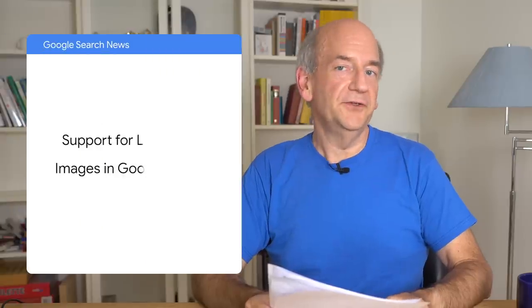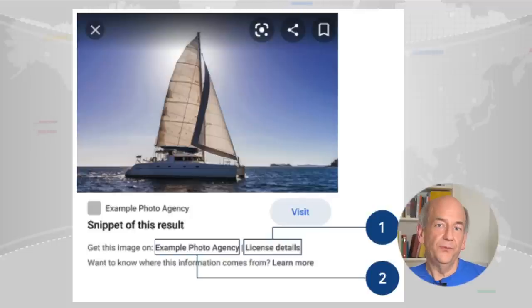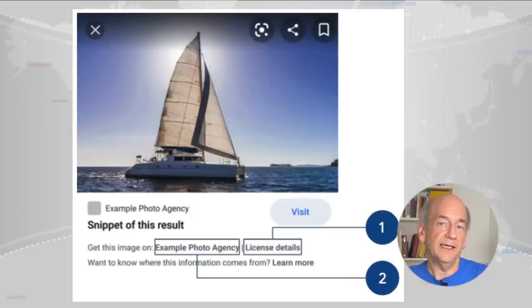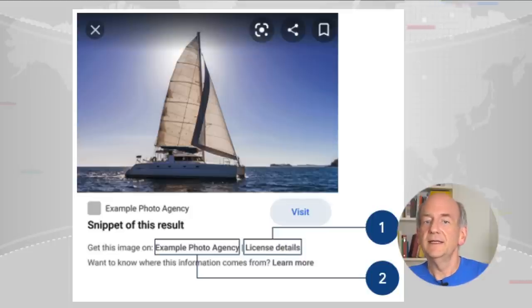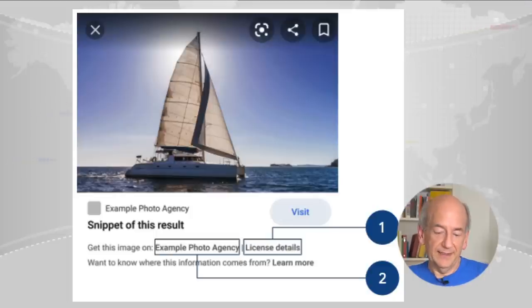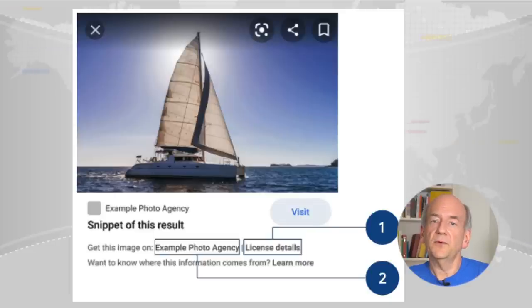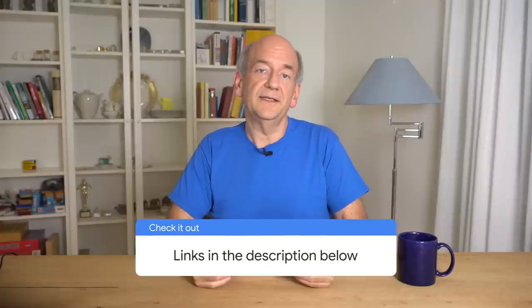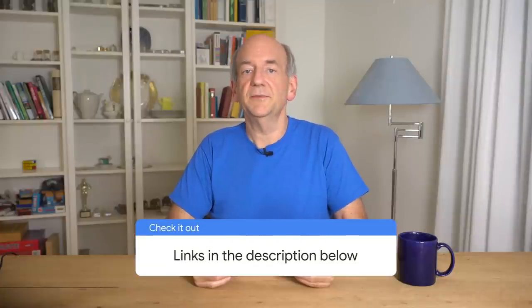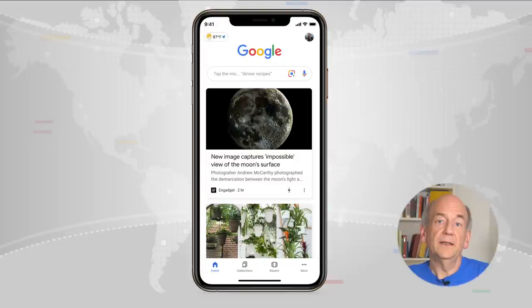Moving along to images. We recently launched support for licensable images in Google Images. This allows image providers to give more information about image licensing, better informing users directly in the search results. This can be done either on an image level using IPTC metadata or on a per-page basis using structured data markup. Our documentation has the implementation details, and Search Console can help with the rich results test.